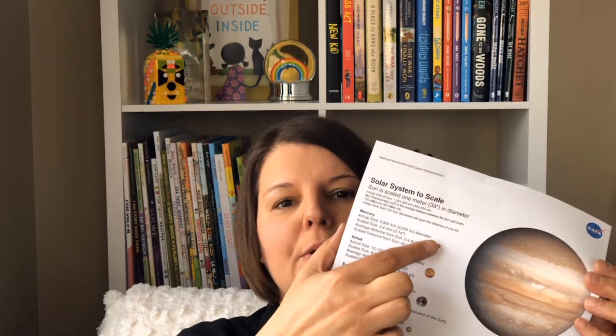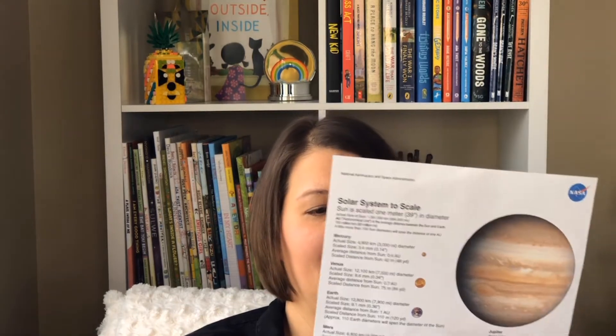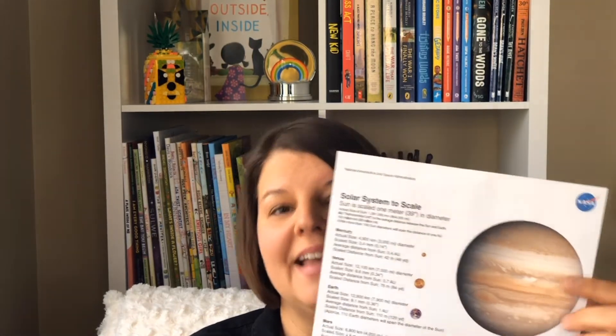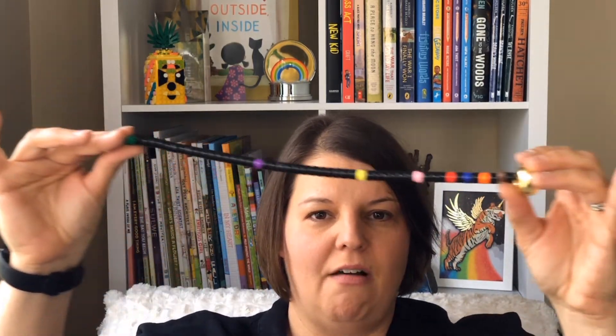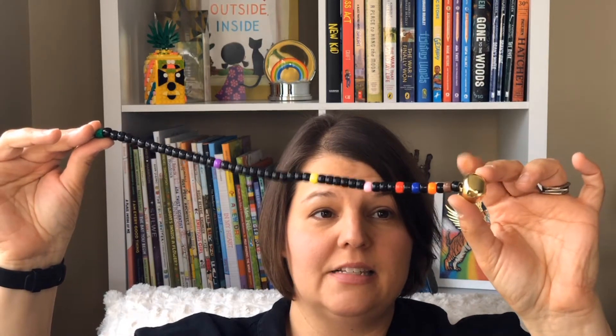This is teeny tiny little Mercury right here and this is gigantic Jupiter. Earth is about that big compared to the rest of the planets. So in the activity we're doing today all the planets are the same size but what we're doing is we're looking to see the distance between all of the planets. This bell is our Sun.